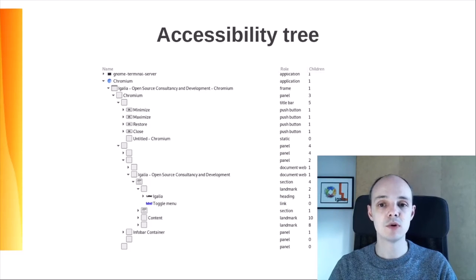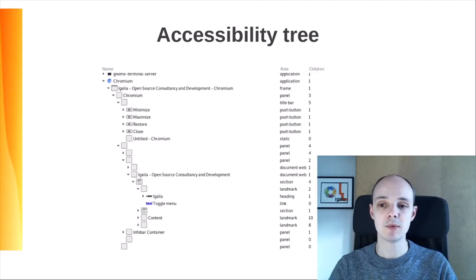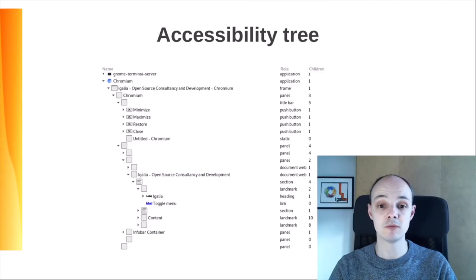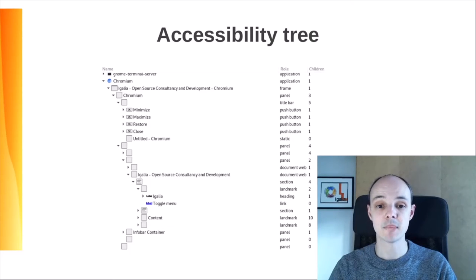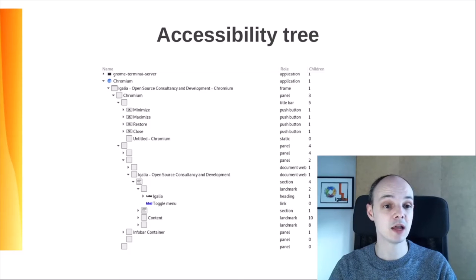This is a real-world example of an accessibility tree from the Chromium web browser. Notice how it seamlessly exposes the application UI and the web contents as part of the same tree. Roles are shared by the application UI and the web content — for example, a button is the same role, be it a native button in the UI or a button in a web form. The only indication of something being web content is the role of the container element.